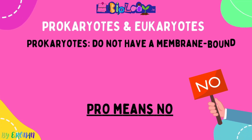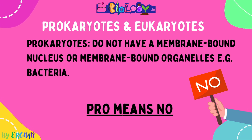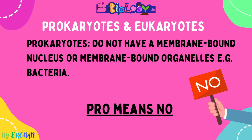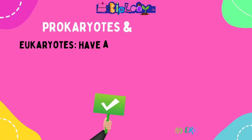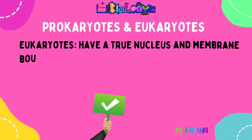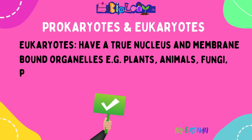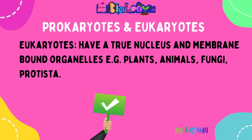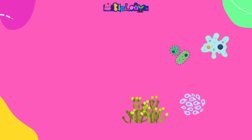Prokaryotes are cells that do not have a membrane-enclosed nucleus or membrane-enclosed organelles — for example, bacteria. The prefix 'pro' means no. Eukaryotes, on the other hand, have a nucleus and membrane-bound organelles — these include plants, animals, fungi, and protista. So eukaryotes have a membrane-bound nucleus and membrane-bound organelles.